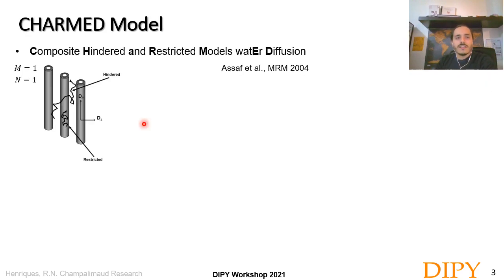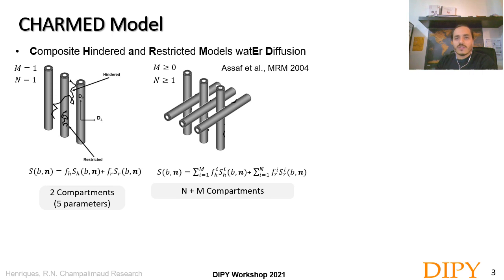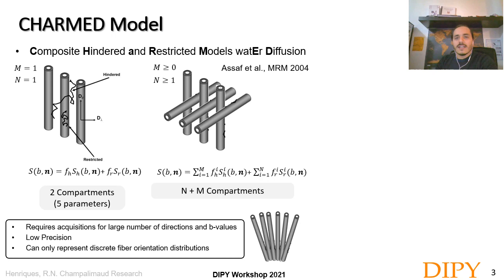Another popular model is the Composite Hindered and Restricted Model of water diffusion, proposed by Assaf. This model was proposed as a general framework to represent restricted diffusion inside intracellular spaces and hindered diffusion representing the extracellular space. It can be fitted with a general number of compartments — one restricted and one hindered compartment for well-aligned structures, or more compartments for crossing structures, at the expense of requiring a large number of directions and b-values. A limitation is that it can only represent structures along discrete directions, making it inefficient to model tissue dispersion.